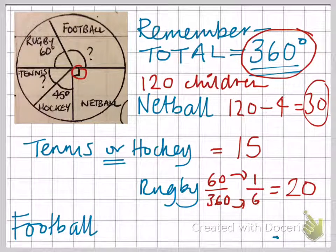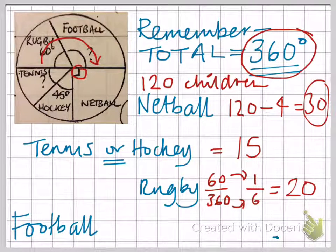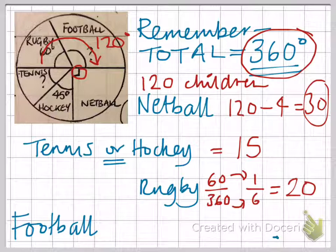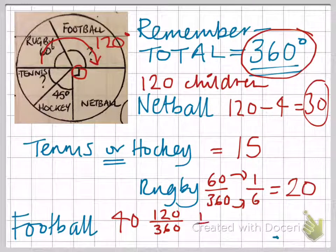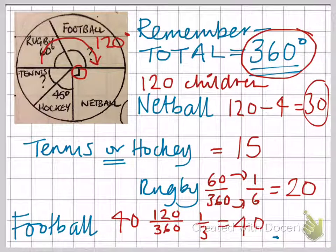But not as tricky as football because first of all we've got to work out what the angle is. This whole angle here would be 180. 60 of it is taken up by rugby, which means there's 120 degrees left for football. Now 120 is double 60, so it's double the number of children who did rugby, so we could say 40 for that. Another way to do it is 120 out of 360 degrees, which simplifies to one third. One third of 120 is 40 — we get the same answer.